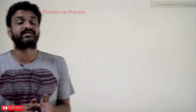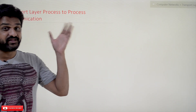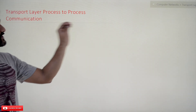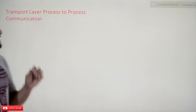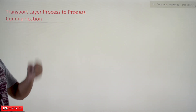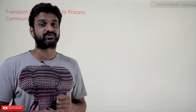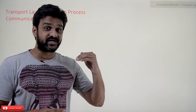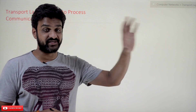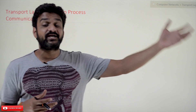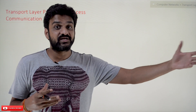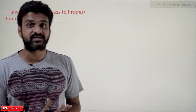From this video we are going to start our new section called Transport Layer. The complete concepts of transport layer will get discussed, and the main objective of the transport layer is process-to-process communication. In the network layer, it is called host-to-host communication — for example, if a system wants to communicate with another system located on the other end of the internet, it gets identified using the network layer.